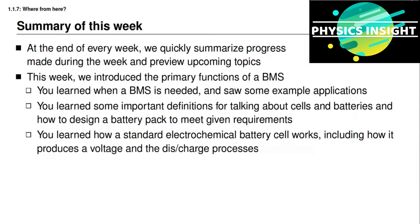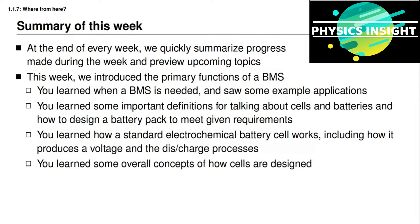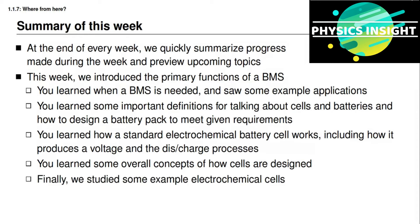You also learned about how a standard electrochemical battery cell operates, including how it produces a voltage and some internal details of the discharge and charge process. And you learned some overall concepts related to how electrochemical battery cells are designed. You saw some considerations that have to be taken into account when designing a battery cell. Finally, you saw three examples that brought all of these details together and showed that even though there are many similarities between different types of battery cells, there are also significant distinctions between them that often require that we know something about the internal details of the cells that we wish to manage.